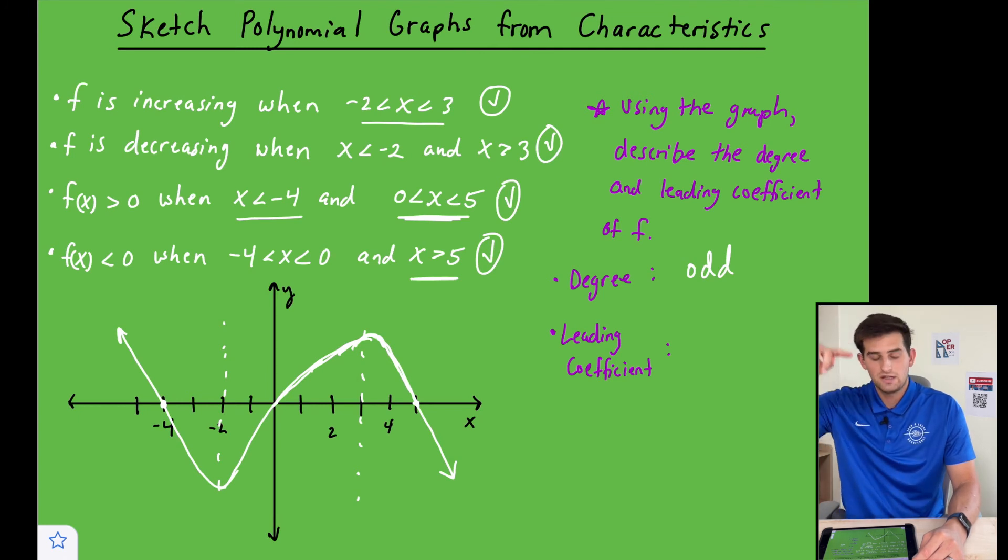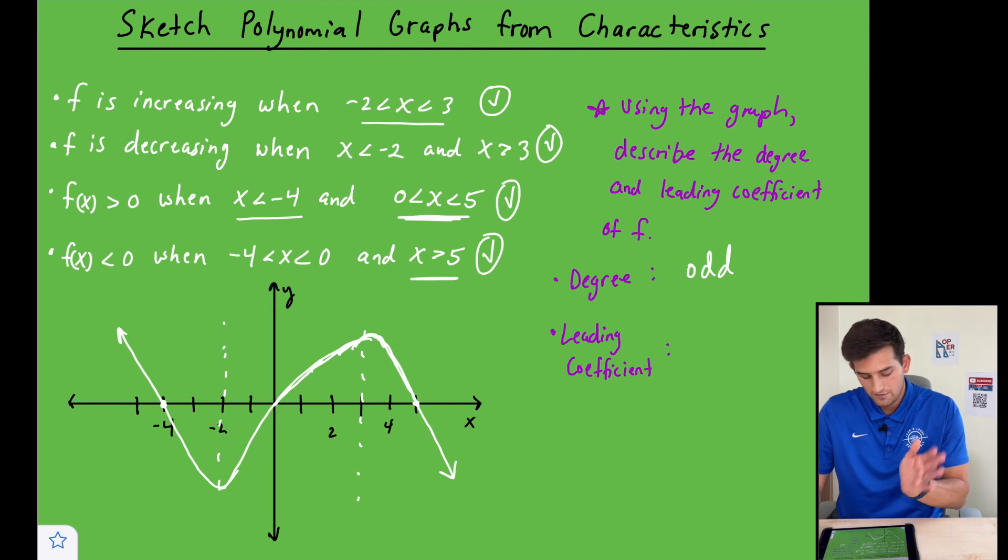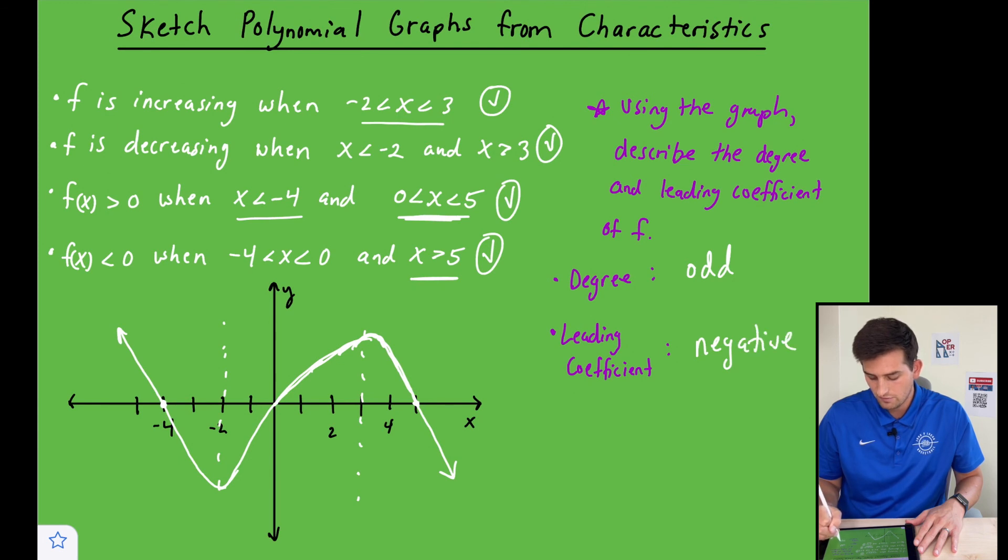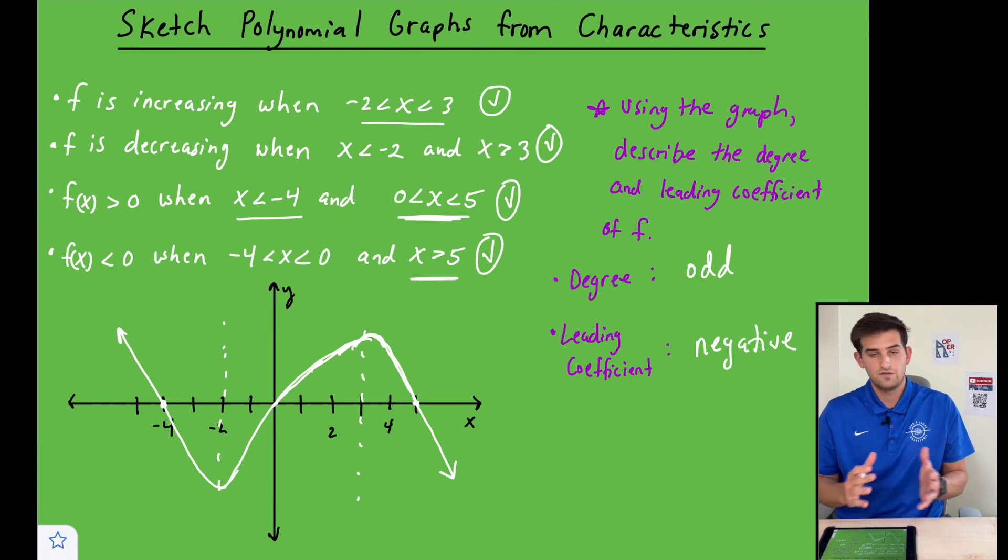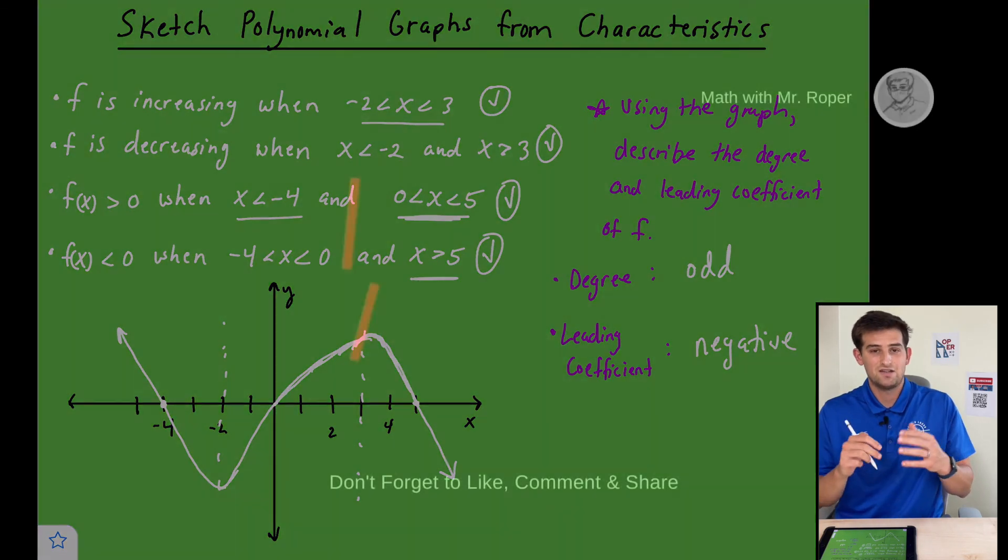Or like a W kind of has two humps in the middle part. Now our leading coefficient is either going to be positive or negative. So with this one, we are going down initially and then we're finishing down. So that means our leading coefficient would be a negative number. If it were positive, it would look more like this. So negative leading coefficient, odd degree. And that is how we can take some characteristics and sketch a polynomial graph.